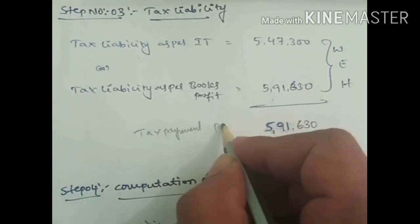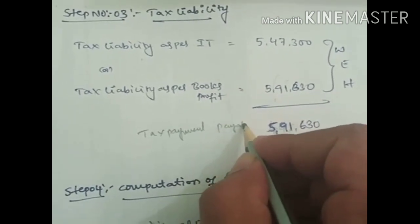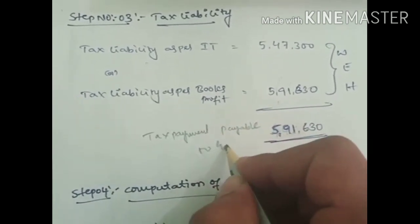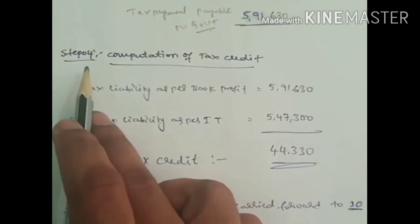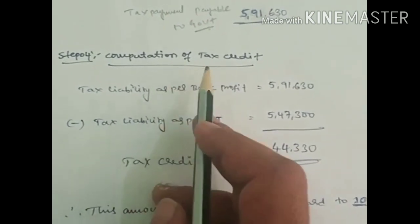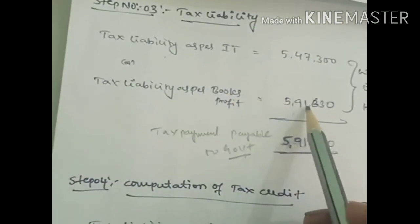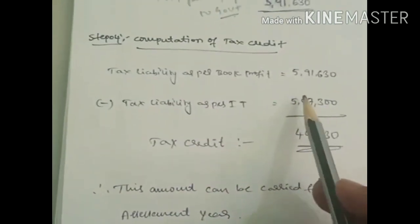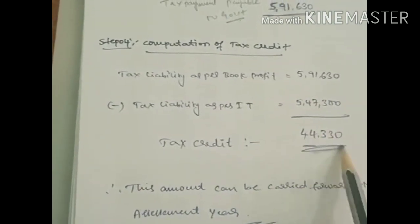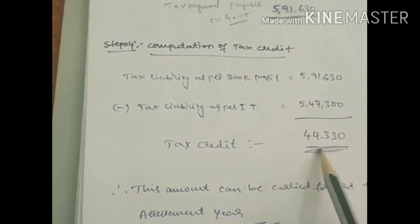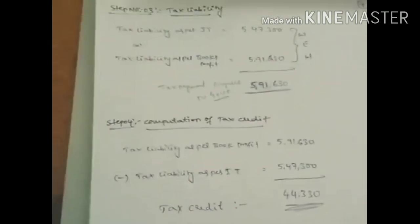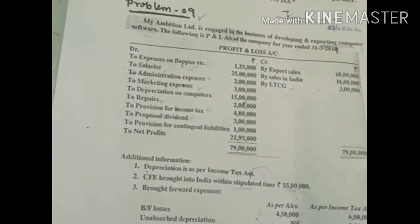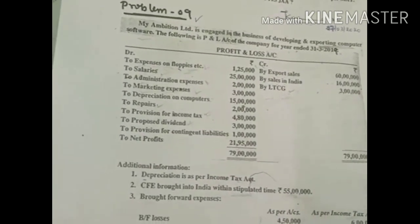Step four is computation of tax credit. Since step two is greater than step one, subtract step one from step two: the excess amount of 44,330 rupees can be carried forward for consecutively 10 assessment years. This is how we solve Problem 9. If you have any doubts or queries, feel free to ask. Thank you, have a nice day.